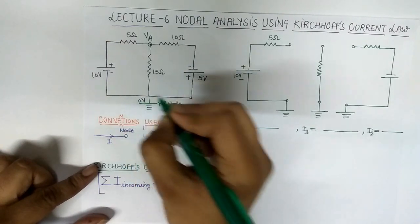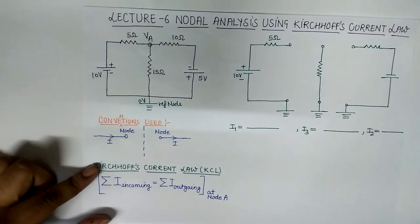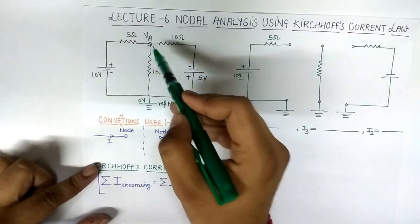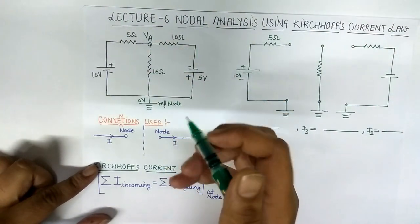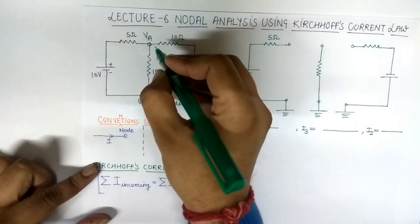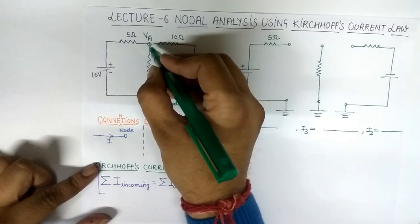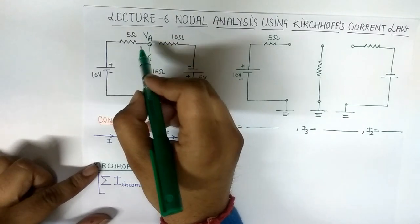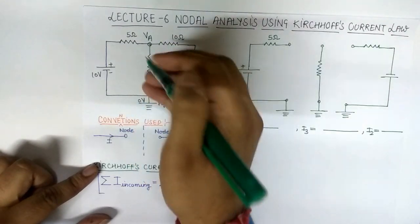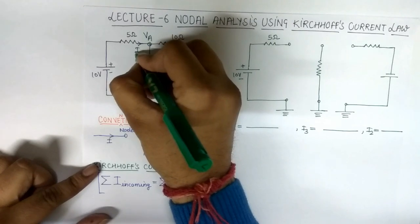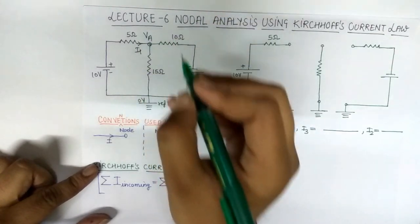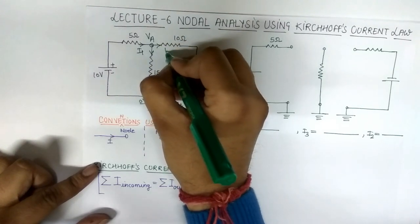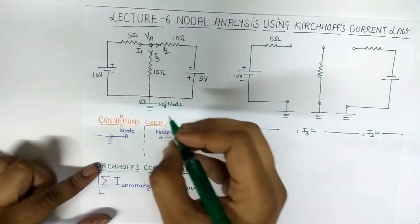So after assuming nodes or junctions, we assume the current at this junction in the particular branch. Let us say at this node there are three branches. Let us say I1 is incoming to this node and I2 and I3 are outgoing.